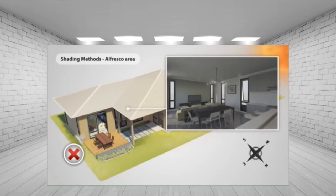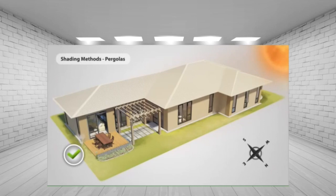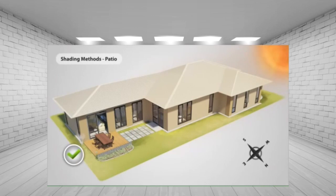Covered open spaces, commonly known as al fresco areas, should be placed on the south side of the house, leaving the north side open to receive the winter sun. A covered area on the north side means sunlight cannot penetrate into the house, reducing warmth and natural light. You can still have private outdoor open space to the north, but it should only have temporary shading which can be withdrawn in winter. A pergola with a deciduous vine provides shade in summer but allows winter sun in when the leaves fall off.